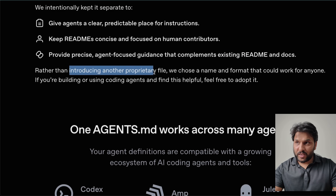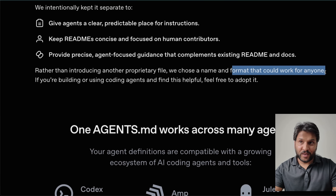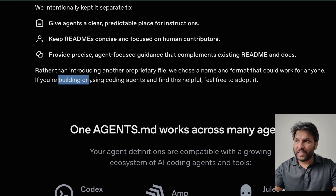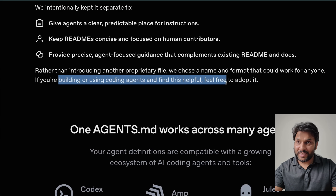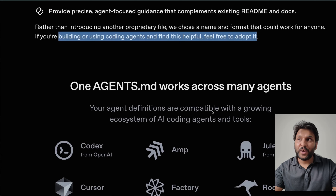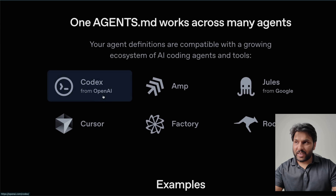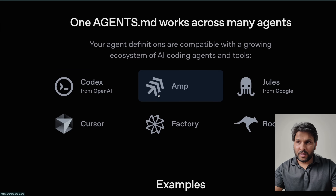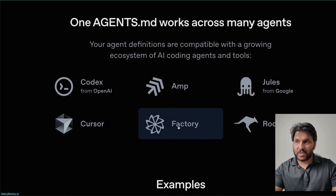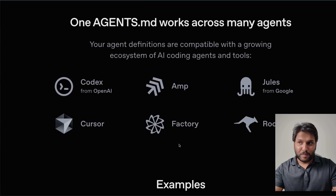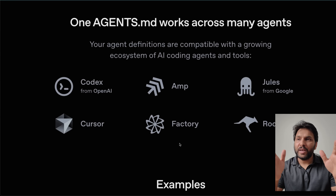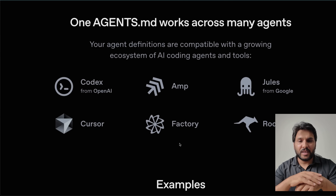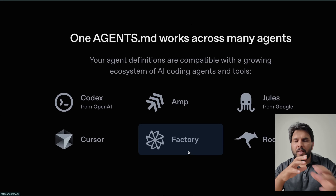Rather than introducing another proprietary file, they chose a name and format that could work for anyone. If you're building or using coding agents and find this helpful, feel free to adopt it. The list of companies involved right now includes OpenAI, AMP Code, Jules from Google, Cursor, and Row Code. There's a big one missing, and that is Anthropic — Claude Code is still following claude.md. But hopefully they will also follow the same standard, which will make life easier for developers.